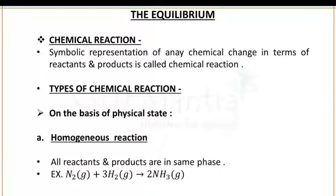If we talk about the types of reactions, we have different types. The first basis is on the physical state. On the basis of physical state, we have two different kinds of reactions: number one is homogeneous reactions and number two is heterogeneous reactions. In homogeneous reactions, all the reactants and products are in the same physical state. The physical states include solid, liquid, and gaseous.